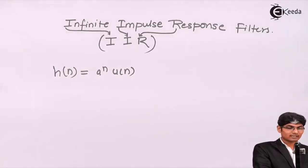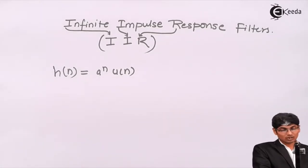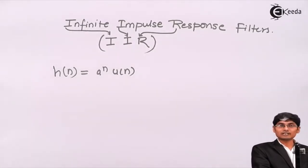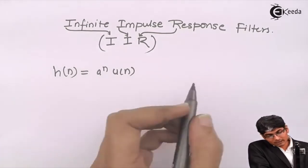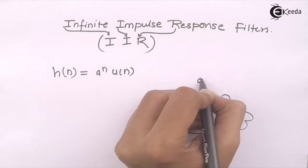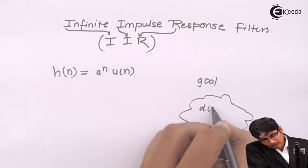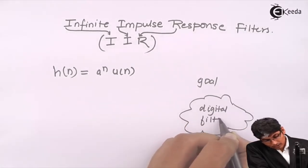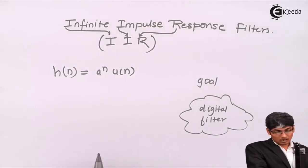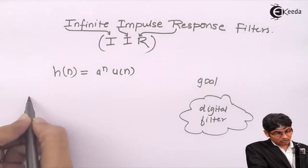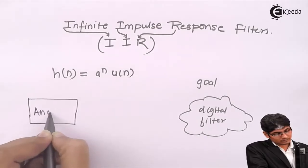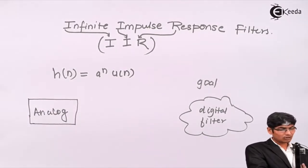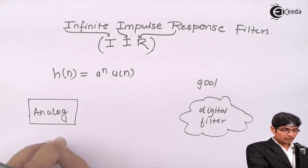So infinite impulse response means the transfer function has many or infinite values. To design these filters, we do not use special methodologies from scratch. Instead, we take the help of analog filters. IIR filters are digital filters, so the ultimate goal is to design a digital filter, but we use the well-described theory of analog filters, which has a huge amount of literature.